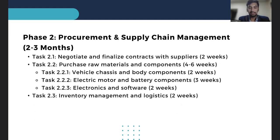The second phase is procurement and supply chain management, which takes around two to three months. This involves securing contracts with suppliers, purchasing all necessary raw materials and components, and ensuring efficient inventory management and logistics.